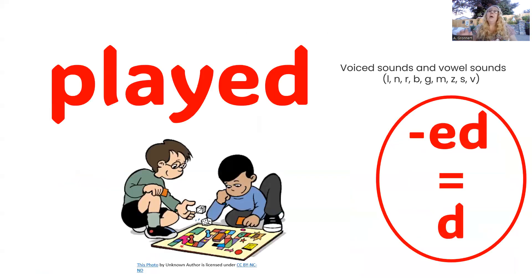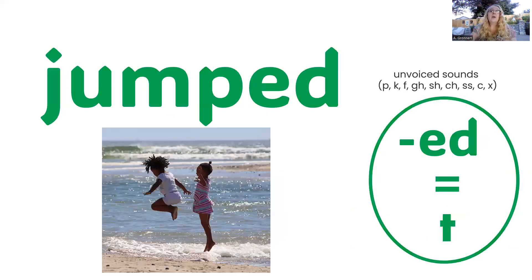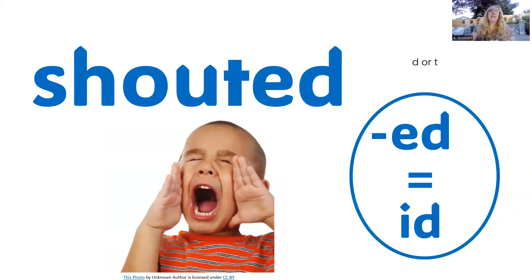Well, verbs that end with voice sounds and vowel sounds, the ed always says d. For verbs that end with unvoiced sounds, the ed always says t. And for verbs that end with d or t, the ed says id. Let's practice.